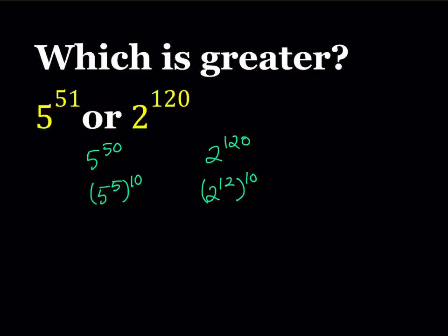So let's go ahead and take a look at this and see what happens. Well, 5 to the 5th power is basically 3,125 and 2 to the power 12 is supposed to be 4,096. Now, as you can see here, 3,125 is less than 4,096. Obviously, when you raise them to the 10th power, the inequality will be preserved. They're going to be the same order.